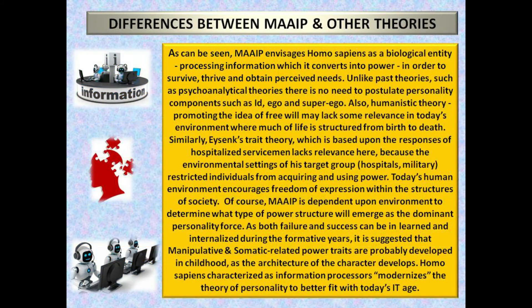Differences between MAIP and other theories: MAIP envisages Homo sapiens as a biological entity processing information which it converts into power in order to survive, thrive and obtain perceived needs. Unlike past theories such as psychoanalytical theories, there is no need to postulate personality components such as id, ego and superego. Humanistic theory, promoting the idea of free will, may lack some relevance in today's environment where much of life is structured from birth to death. Similarly, Eysenck's trait theory, based upon the responses of hospitalized servicemen, lacks relevance because the environmental settings of his target group — hospitals and military — restricted individuals from acquiring and using power.